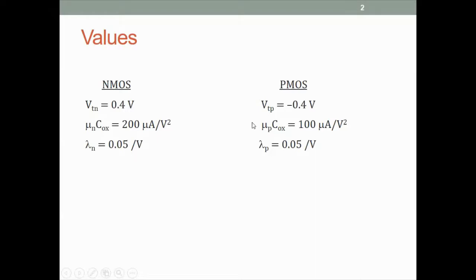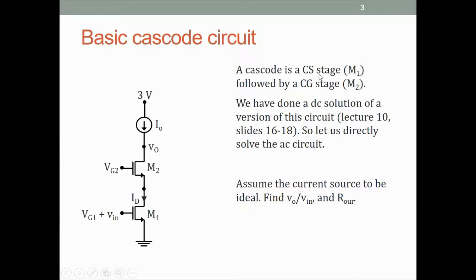In this lecture we talk about cascode amplifiers. A cascode is a common source stage followed by a common gate stage. One sometimes says common source cascaded by a common gate, but I don't like that terminology because cascade means something different. So the common source stage has the input applied to the gate of a transistor, the output is taken at the drain. The output of the common source at the drain is applied to the source of another transistor, which is a common gate stage because the input is at the source and the output is taken at the drain. So M1, M2 form the basic cascode structure.